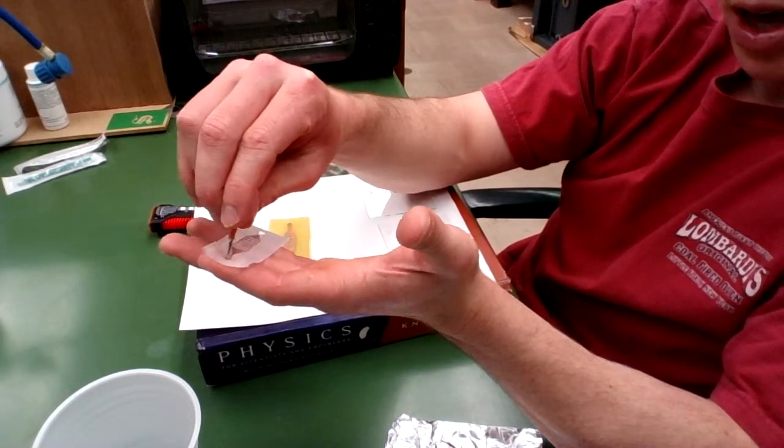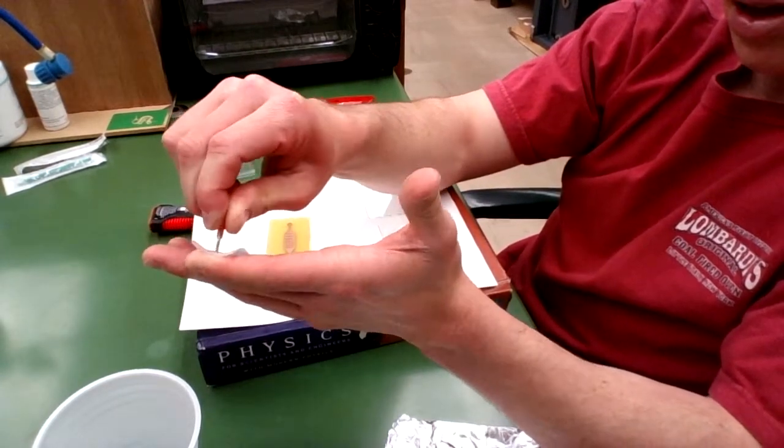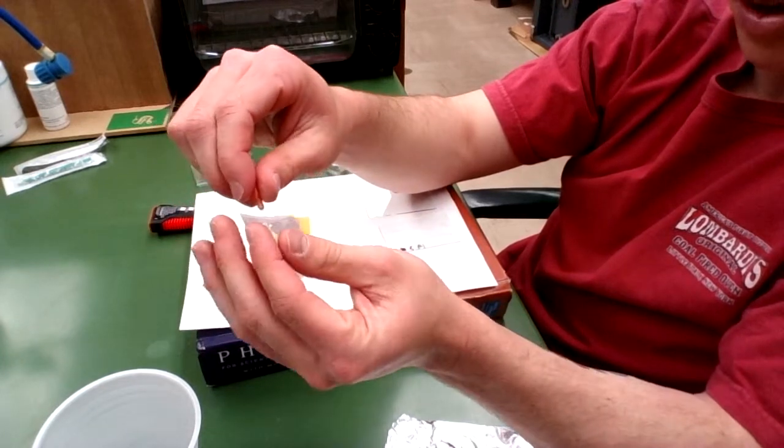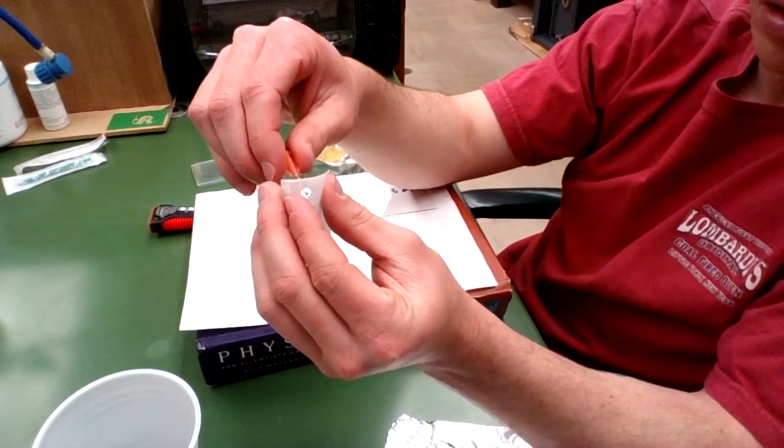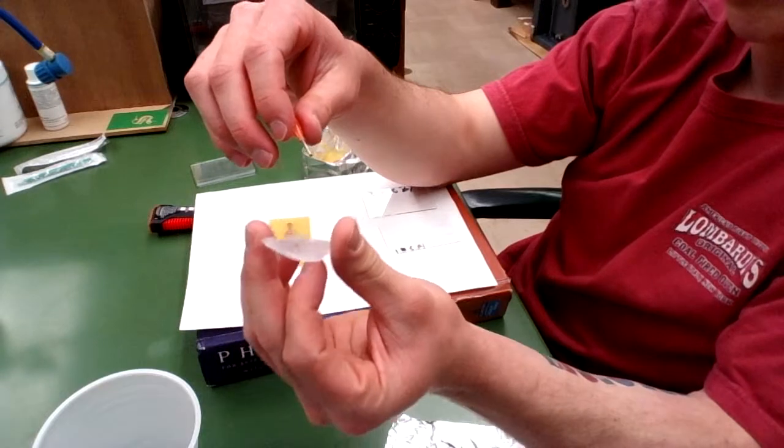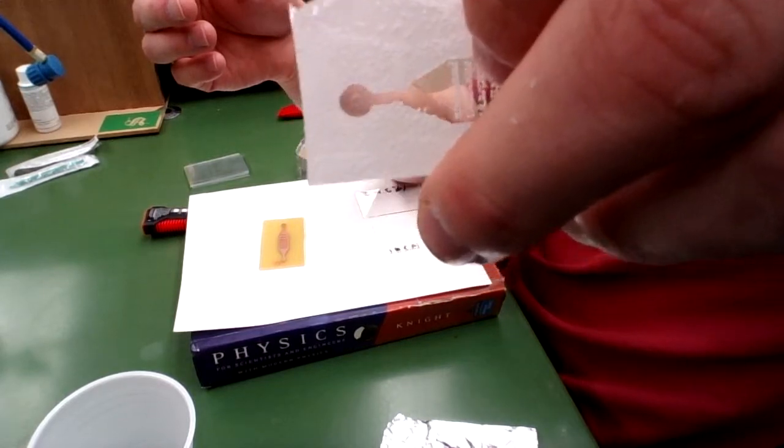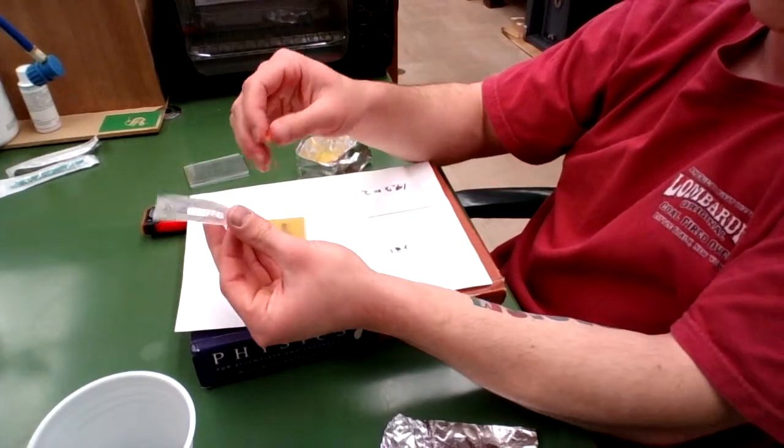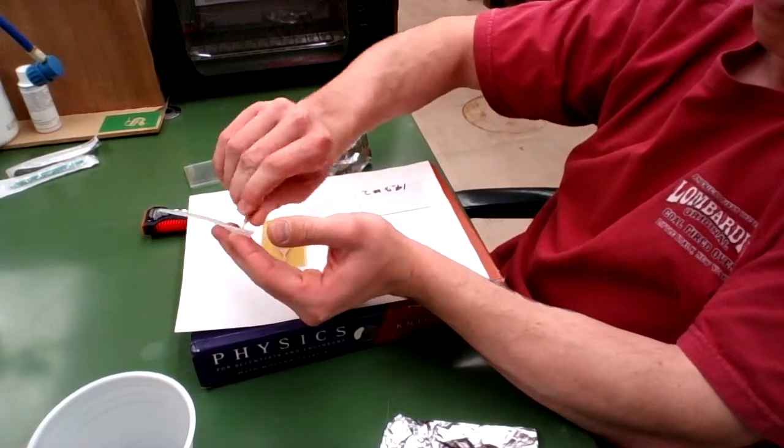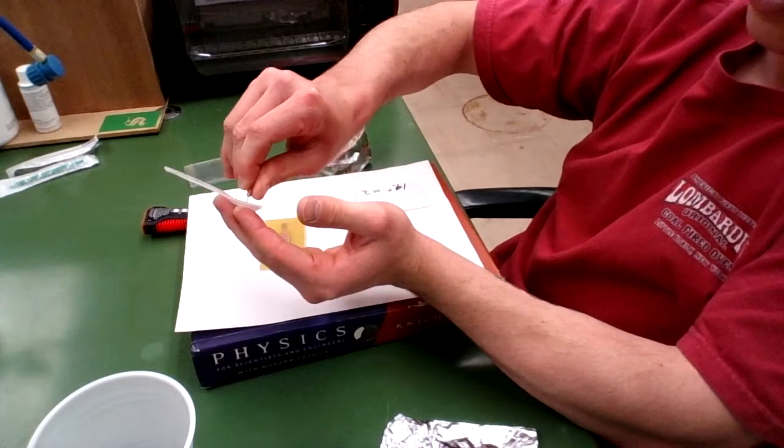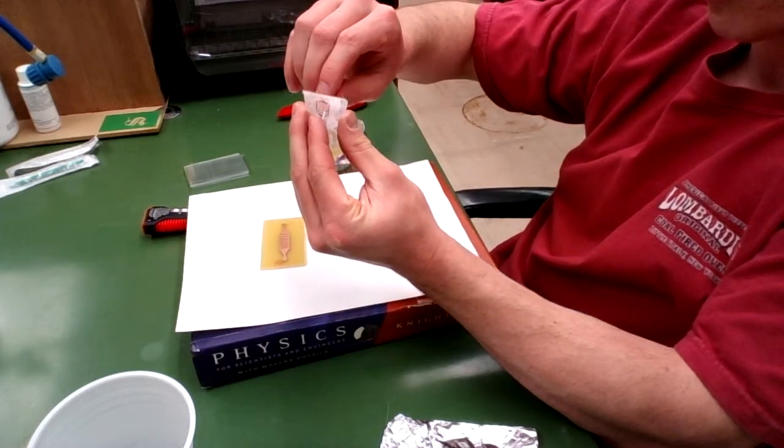So I'm going to punch this into the inlet here, making sure once again to only have the tip of the luer touch the bottom of the device and definitely not my fingers whatsoever. There we have one hole. Alright, now I'm going to punch the outlet. You want to be as gentle as you can in this process, as the PDMS is pretty susceptible to tearing under this kind of stress.